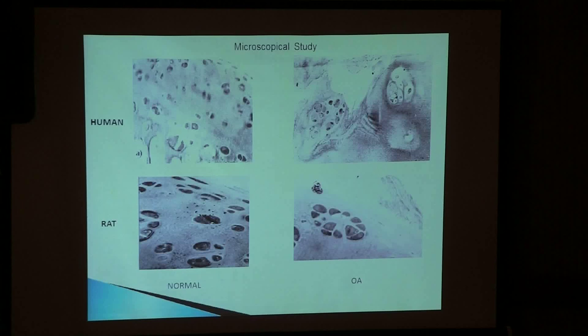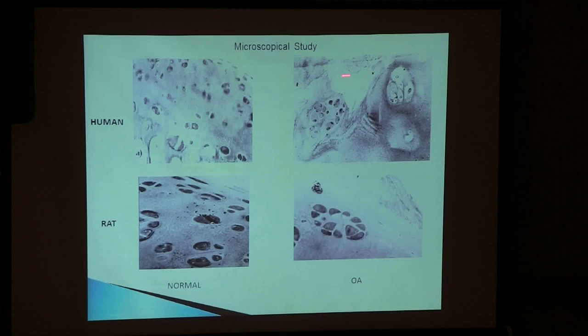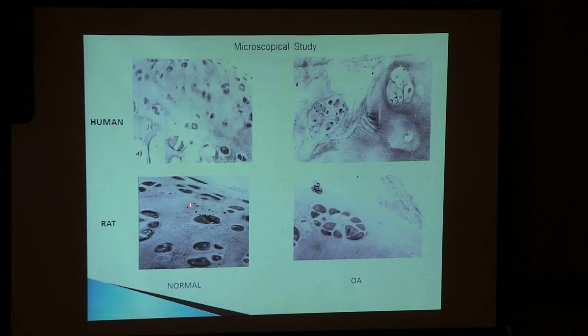Since the beginning, we studied morphology — macroscopical studies of the human cartilage. This is a normal cartilage, and most changes occur in the superficial zone. The chondrocytes, which are the main and only type of cells here, gather together and change their structure, function, and activity. The same thing we found in the rat model: normal chondrocytes in the superficial zone, metal zone, and the formation of clusters, with fibrillation seen in both human and rat models.